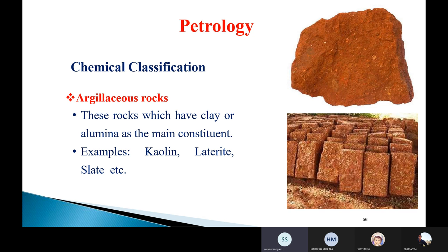The second type under chemical classification is argillaceous rocks. These rocks have clay or aluminium as the main constituent. The main component of argillaceous rocks is clay or aluminium. All of you know about clay — it is a fine-grained material. These clay and aluminium components make up argillaceous rocks.